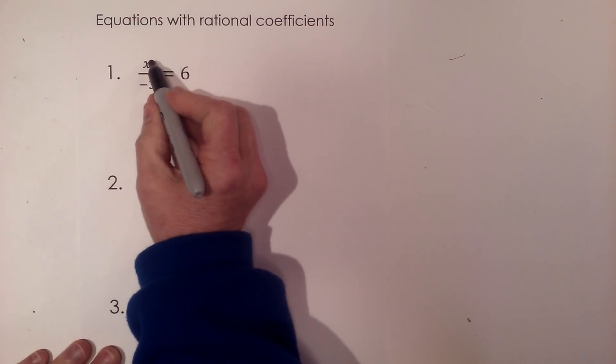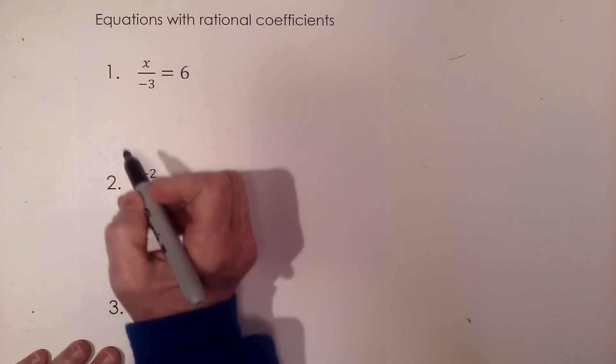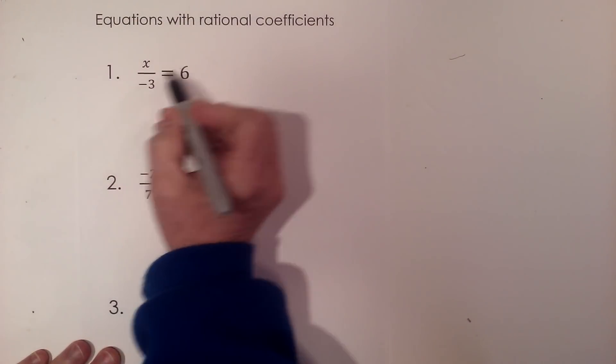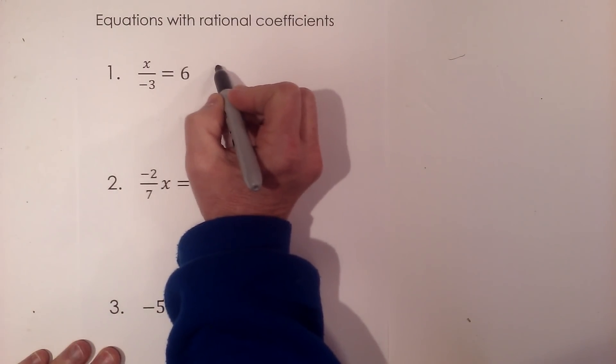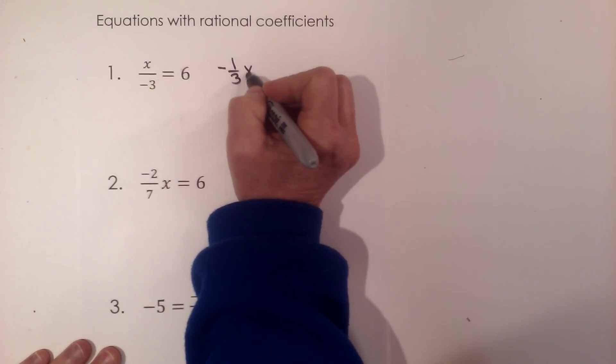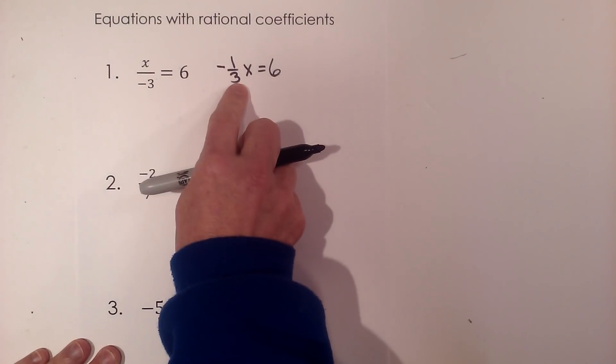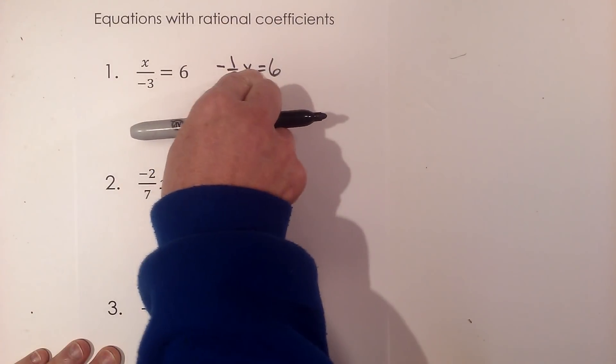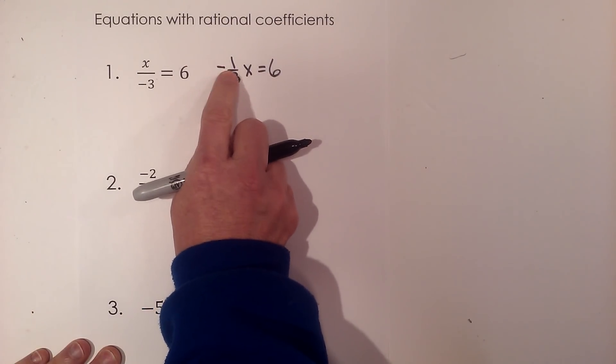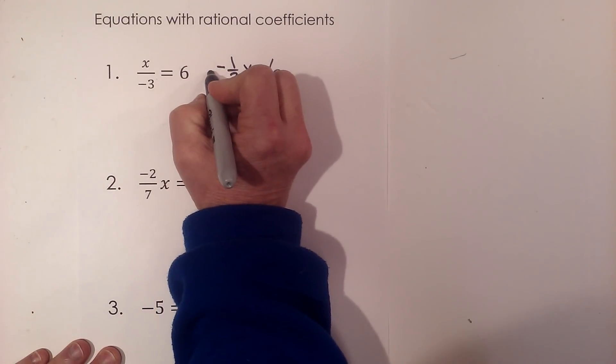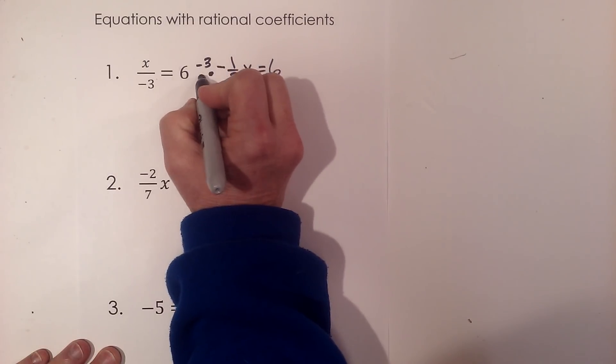We've got x divided by negative three equals six. I'm going to rewrite this as negative one-third x equals six, bringing the fraction in front of my variable x. To clear a fraction, multiply by the reciprocal. When you have a negative, multiply by that negative to clear it out.